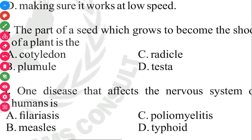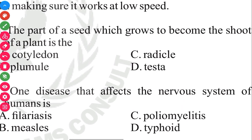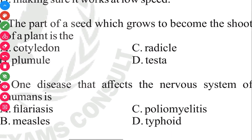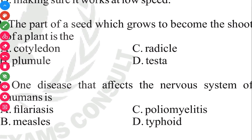One disease that affects the nervous system of humans is poliomyelitis. The answer in 3, 2, 1 is C, poliomyelitis. And the clinical manifestation is weakness and paralysis.